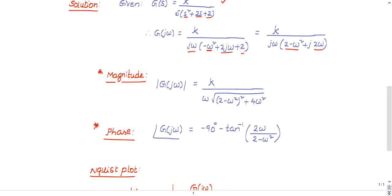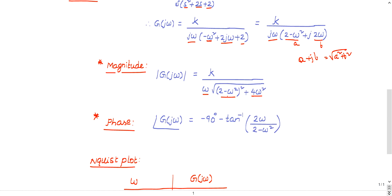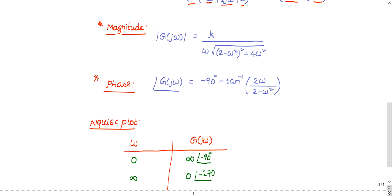Magnitude is K divided by: the magnitude of jω is ω, and the magnitude of (A + jB) is √(A² + B²). So the magnitude is K divided by ω times √[(2 - ω²)² + (2ω)²]. The phase expression is minus 90° (because 1/jω in the denominator gives -90°) minus tan⁻¹ of the imaginary part (2ω) divided by the real part (2 - ω²).